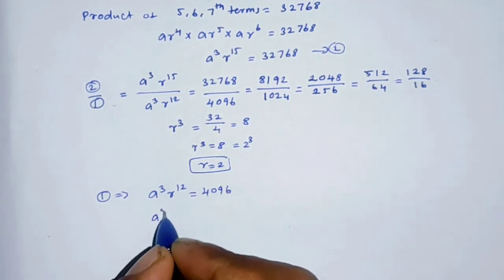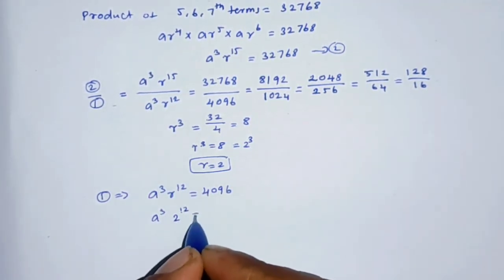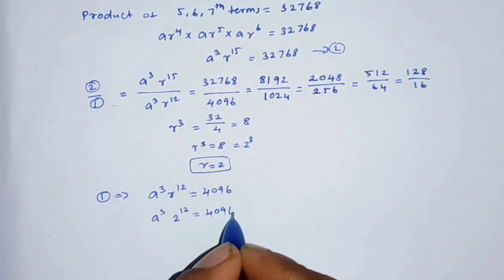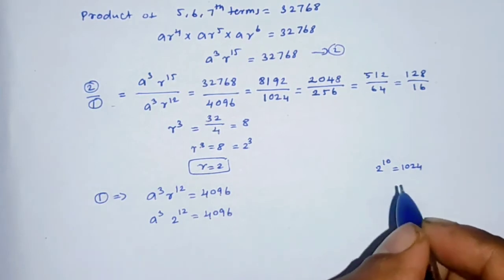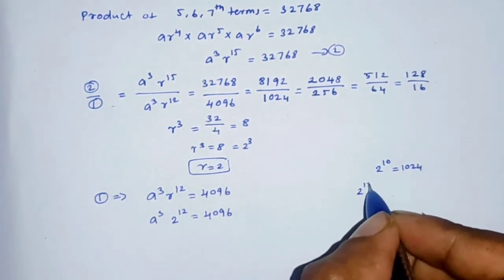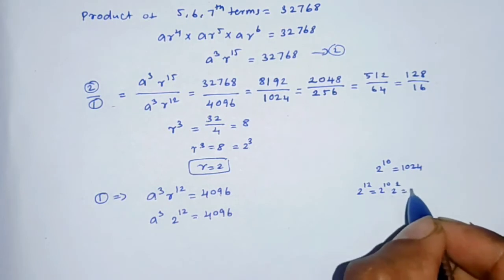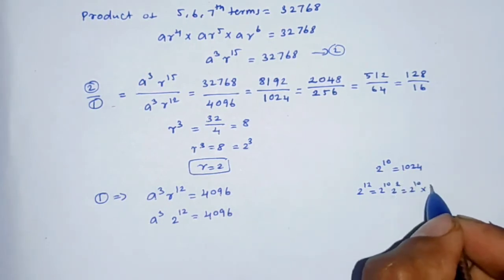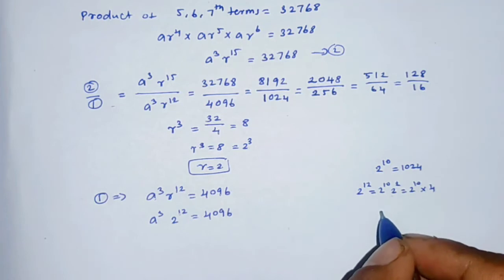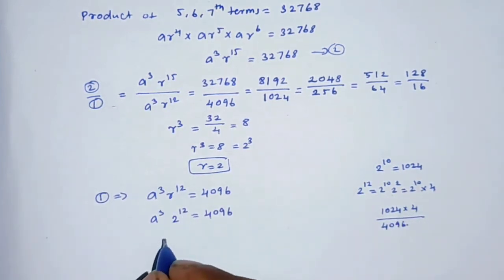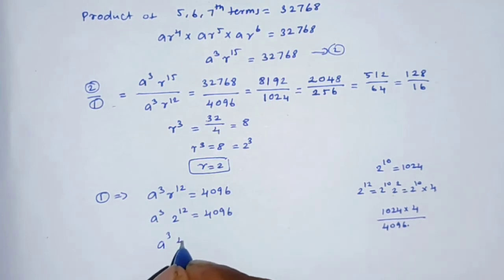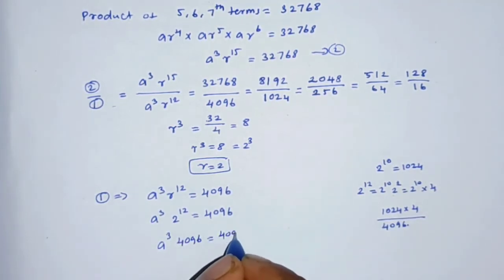Now substituting r = 2: r¹² = 2¹² = 4096. We know 2¹⁰ = 1024, and 2¹² = 2¹⁰ × 2² = 1024 × 4 = 4096. So a³ · r¹² = a³ · 4096 = 4096.